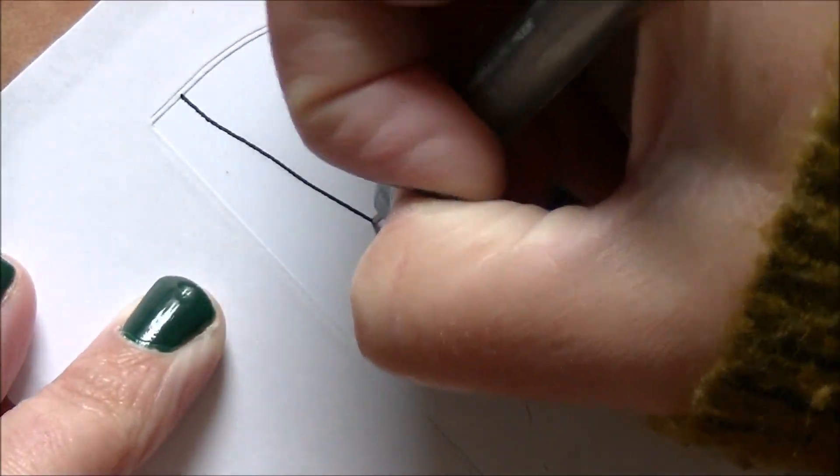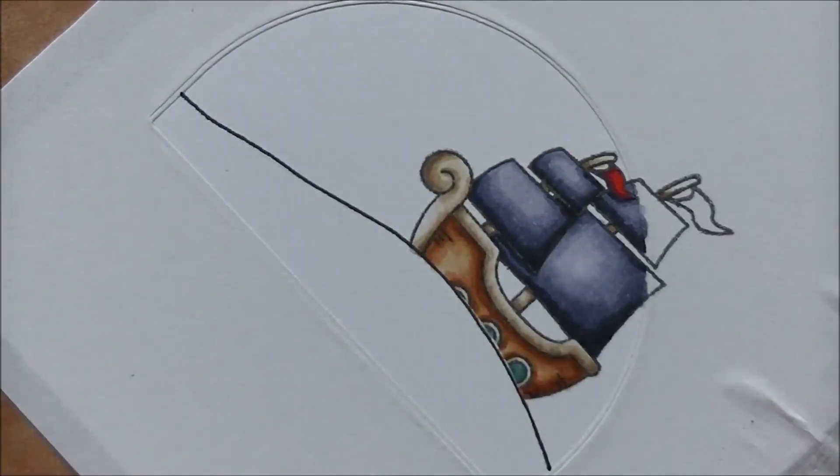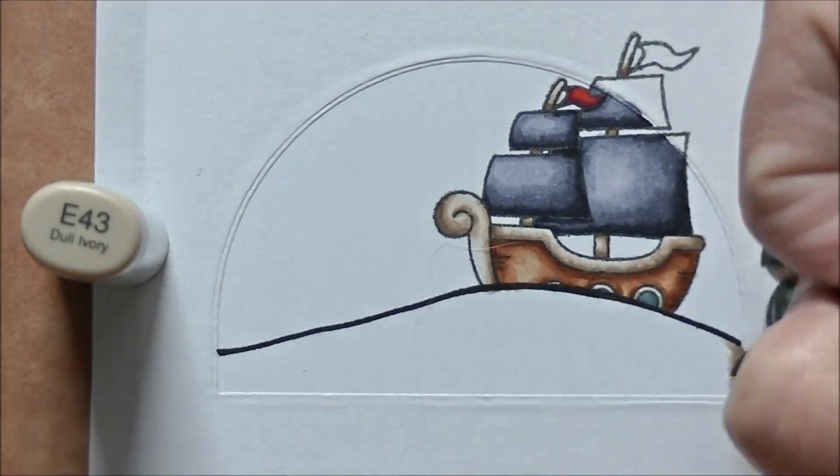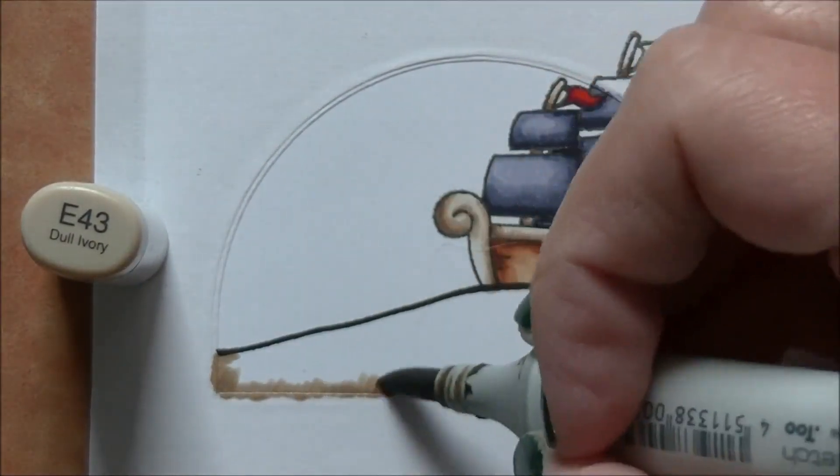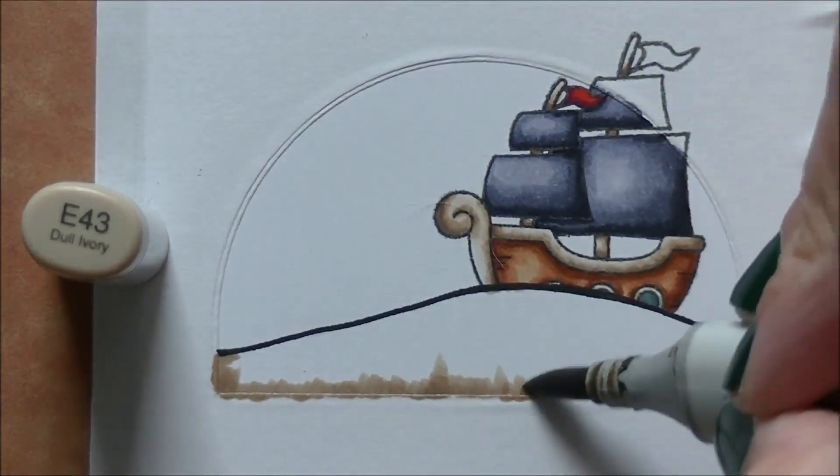So first I started with this 0.03 marker and you can see how my line kind of got a little wavy and I didn't actually quite hit the top. So I did go back over top of it with the 0.5, which is why you can see the line suddenly got thicker.